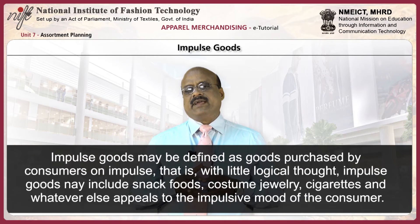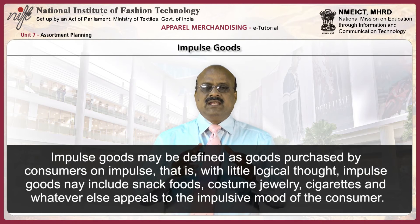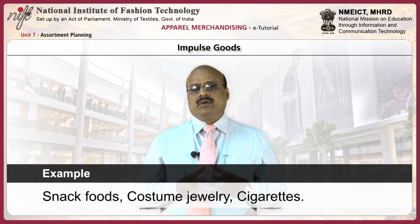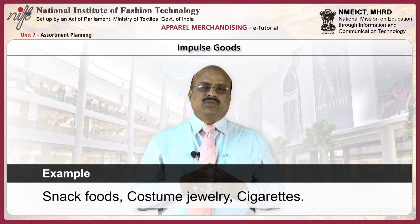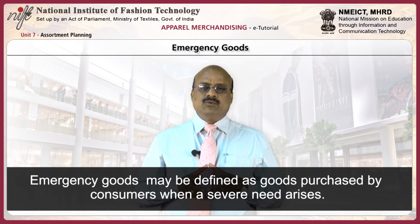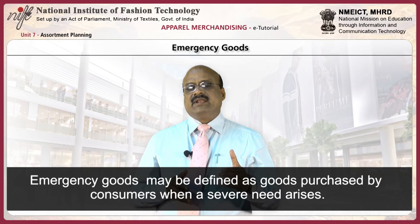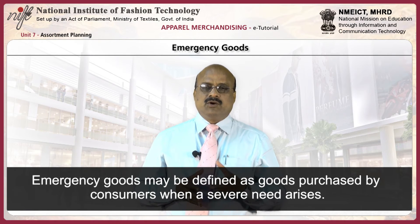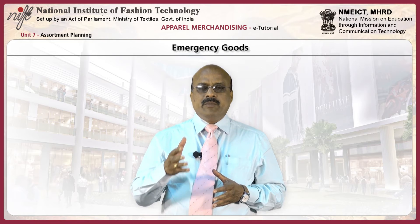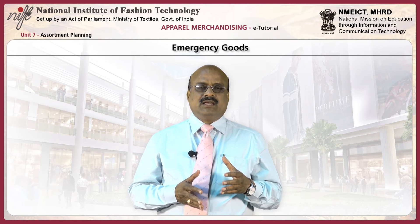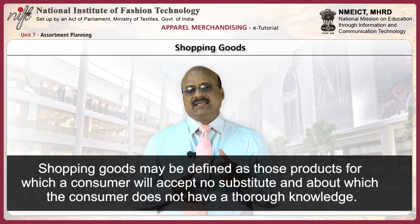Impulse goods may be defined as goods purchased by consumers on impulse — that is, with little logical thought. Impulse goods may include snack foods, costume jewelry, cigarettes, and whatever else appeals to the impulsive mood of the consumer. Emergency goods may be defined as goods purchased by consumers when a severe need arises — for example, a sudden downpour may cause you to purchase an umbrella, or a home accident may cause you to purchase gauze or adhesive tape from a local pharmacy.